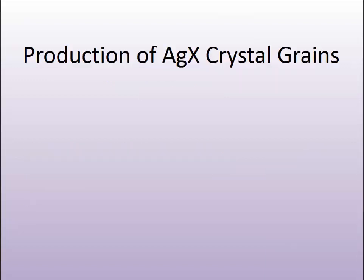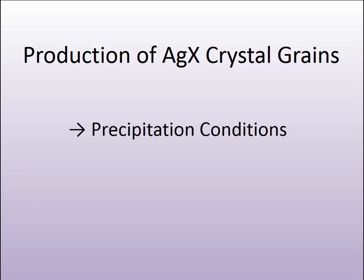Now that we know a little about the chemical and physical properties of the silver halide family, let's see how those properties are leveraged in producing various types of silver halide crystal grains. These conditions are often referred to as the precipitation conditions.